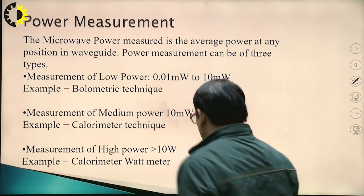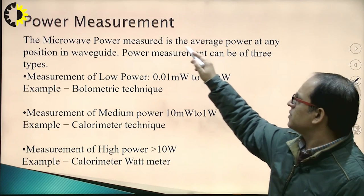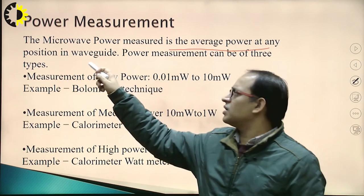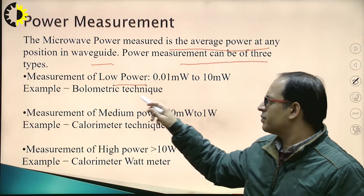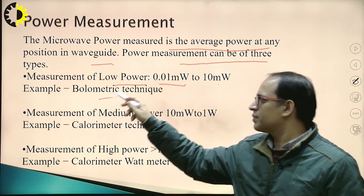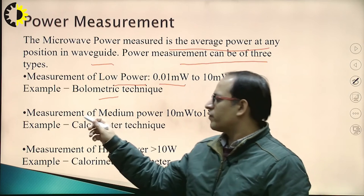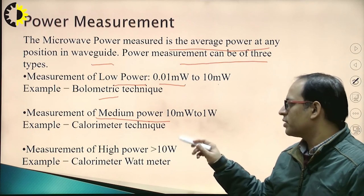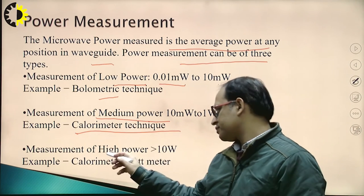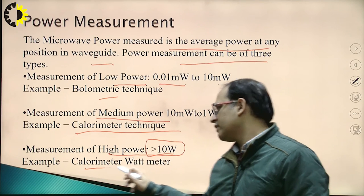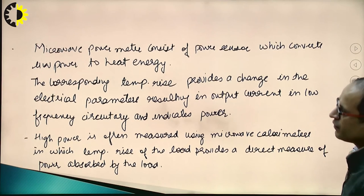In today's lecture we also discuss power measurement. Microwave power is measured as average power at any position in the waveguide. Power measurement is of three types: measurement of low power (0.01 mW to 10 mW) using the bolometric technique; measurement of medium power (10 mW to 1 W) using the calorimeter technique; and measurement of high power (greater than 10 W) using a calorimetric watt meter.